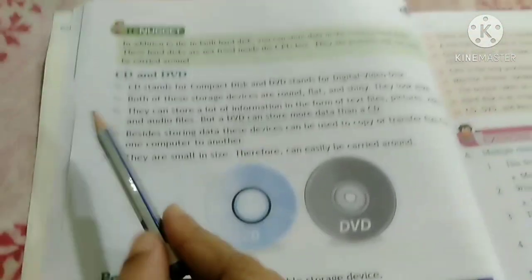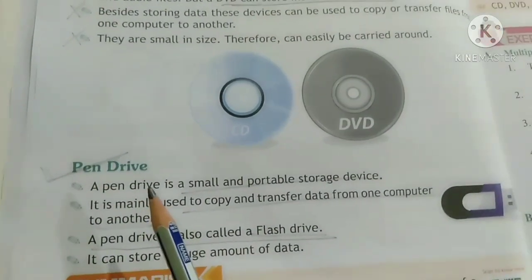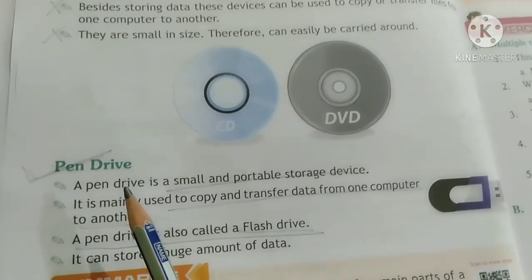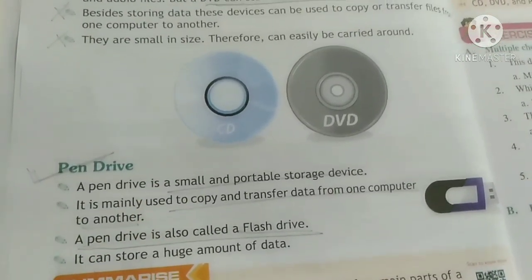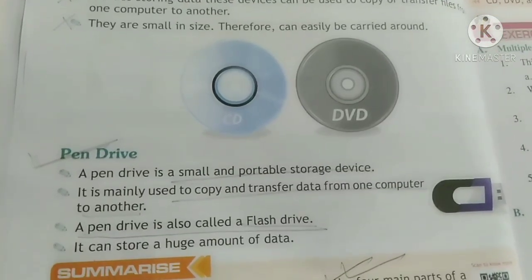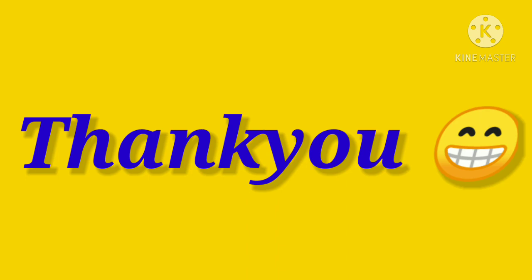So CD, DVD, and pen drive are external storage devices, and the inbuilt storage device is your hard disk. Here we finish our chapter 3. In our next class, we will do the exercises. Your homework is to read the chapter loudly and try to understand while reading. See you in the next class — have a nice time, thank you and bye bye.